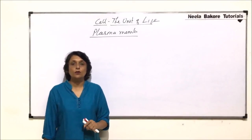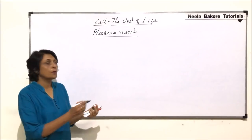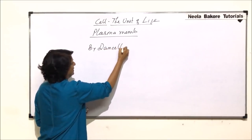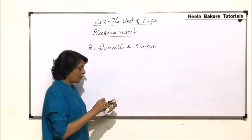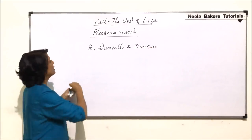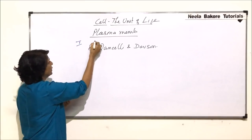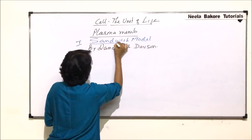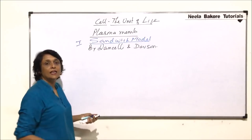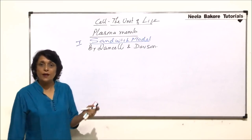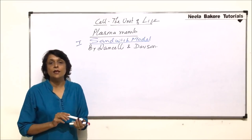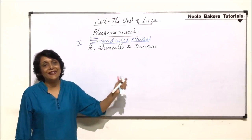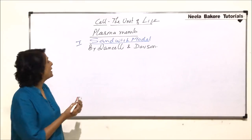In this part we will talk about the model of plasma membrane which was proposed by Danielli and Davson. They called their model the sandwich model. This is the one we are discussing first. After we understand the model, we will also realize why the term 'sandwich model' was given. Danielli and Davson put forth certain points; we will take up those points and then draw the structure of the plasma membrane.